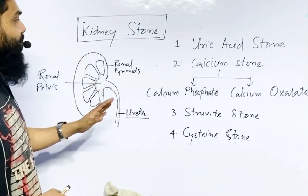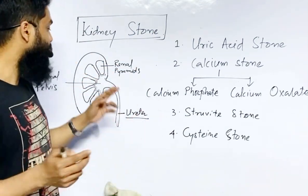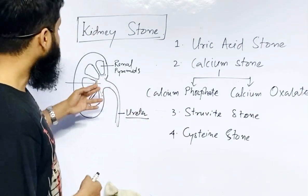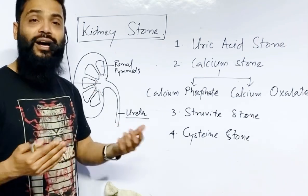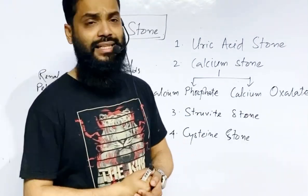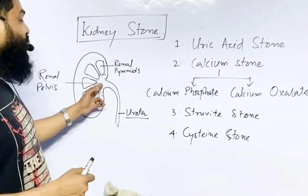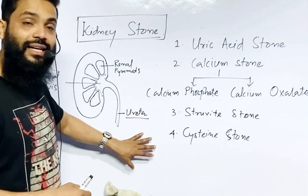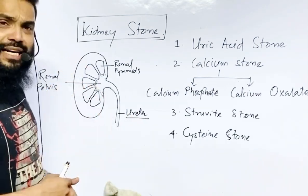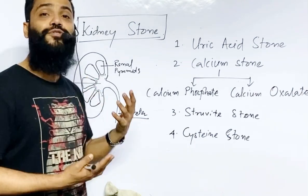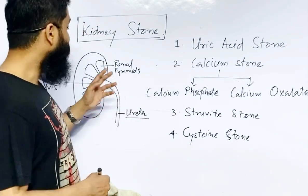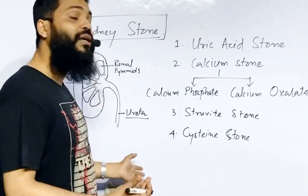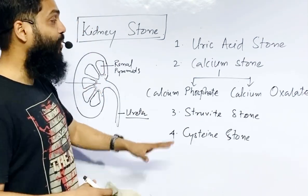Whenever uric acid is filtered from our bloodstream to here, this uric acid can start accumulation of stones. If this kind of aggregation happens for a longer time, it can result in a larger stone. If the stone size is larger, that will create problems. Otherwise, many times stones formed here temporarily can come out through the ureter, via the urinary bladder and urethra. But many times when we feel any problem in our kidney due to stones, the size of the stone is actually much larger than what can come out through this pipe.